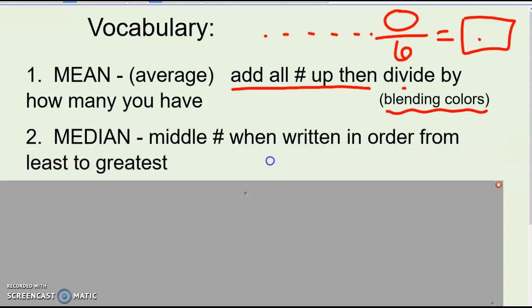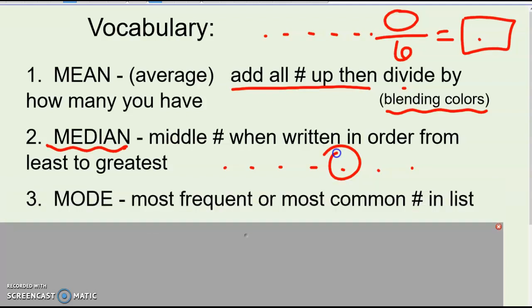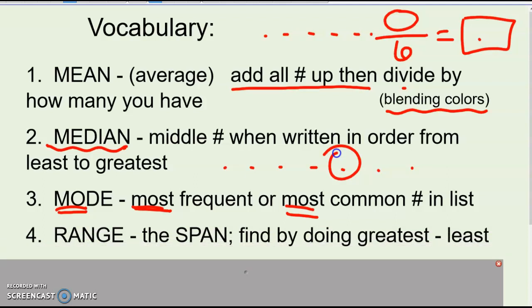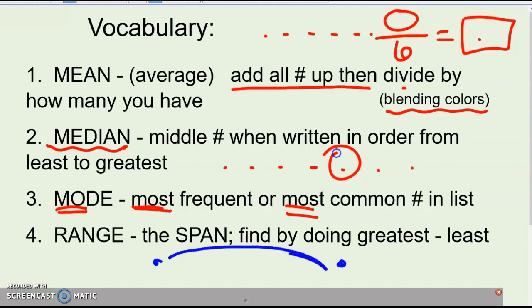Median is the middle number when you write them in order from least to greatest. The biggest problem with this one is that people will forget to put them in order from least to greatest, and they just look at the list and pick the middle one without putting them in order. Median means middle - the median of the highway is the middle of the highway. Mode, M-O, is the most frequent or the most common number in your list. So it's the one that's repeated the most, or the one that appears most often in your list. Range: I like to think of range as like the span - how big a range is there from the biggest to the smallest? You find the range by doing the biggest subtract the smallest number to figure out the range of your data set.